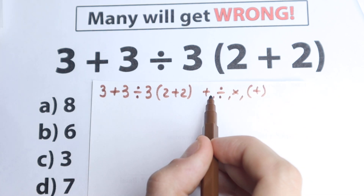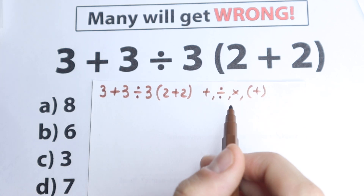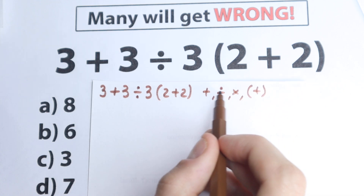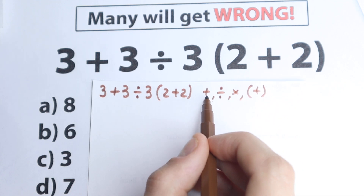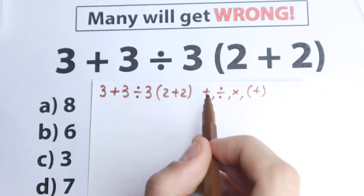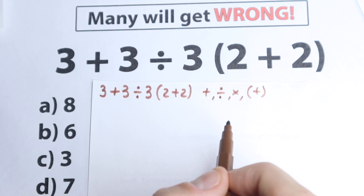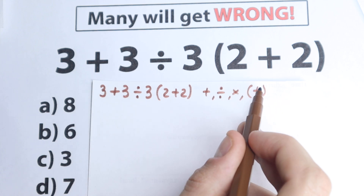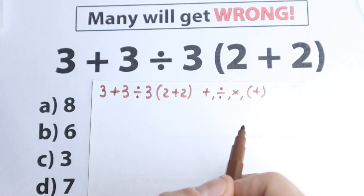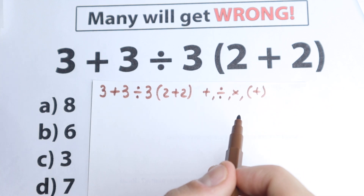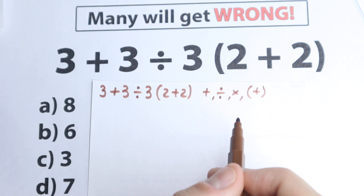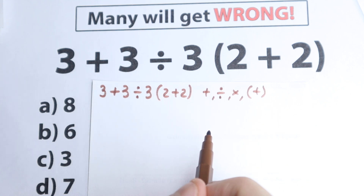We can start from left to right — addition, division, multiplication — or we can start from division, multiplication, addition. With these elements we can combine a lot of combinations. We need to know what is the correct order to do this problem — divide first then add, or parentheses first then multiplication. Because obviously, whatever order of operation you select is going to create a different answer, so we need to understand what is the correct order.